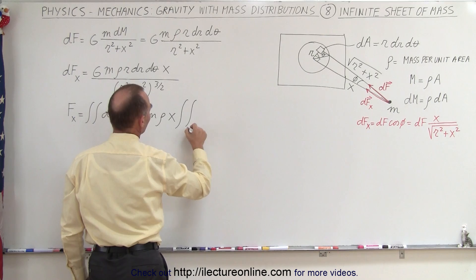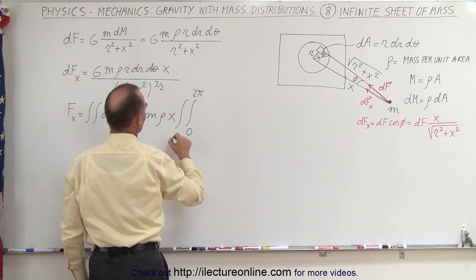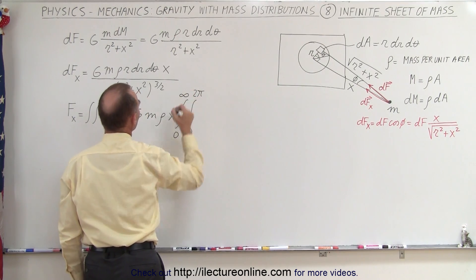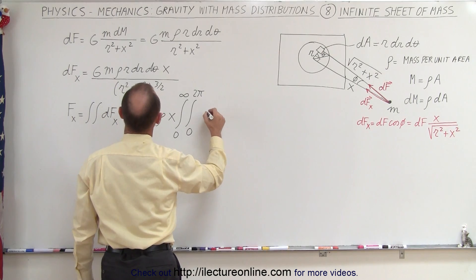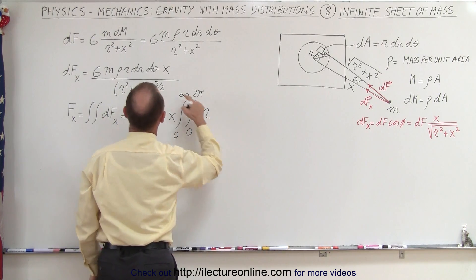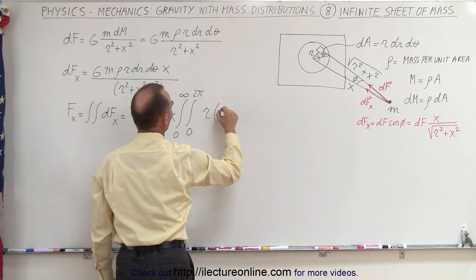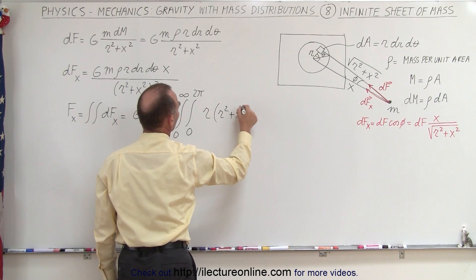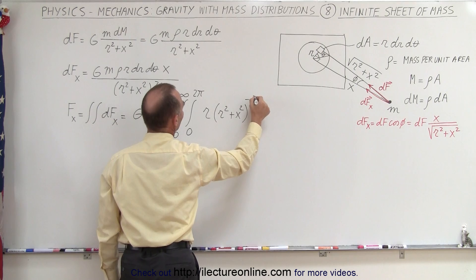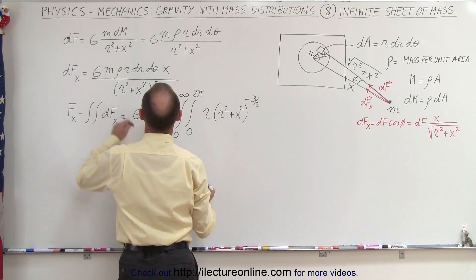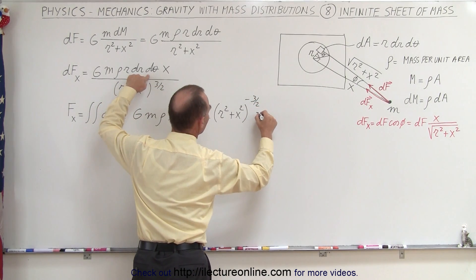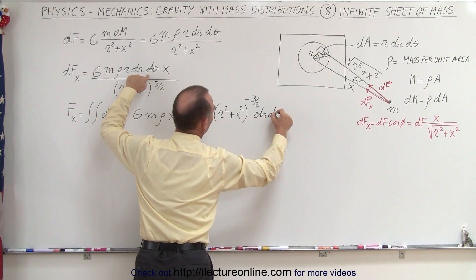And then we're left with the double integral. Theta is going to integrate from 0 to 2 pi, and r is going to go from 0 to infinity. And in the numerator here, we end up with r. The denominator, we can bring it to the numerator. This can then be written as r squared plus x squared to the minus 3 halves power. And then we still have a d theta, a dr, and a d theta. There we go. So now we're ready to integrate.